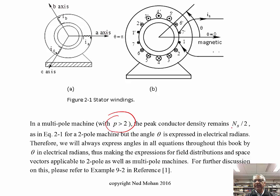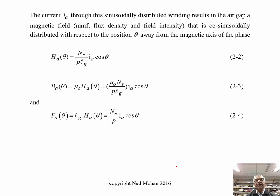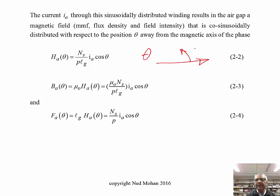The peak current density still remains ns over two, where ns is the number of turns per phase. For a multipole machine, you can look at example 9-2 in the book used for the previous course. Whatever we are doing here is for a p-pole machine, and this angle theta is measured with respect to the phase A magnetic axis in a counterclockwise direction, in electrical radians, to account for a p-pole machine where p may be greater than two.